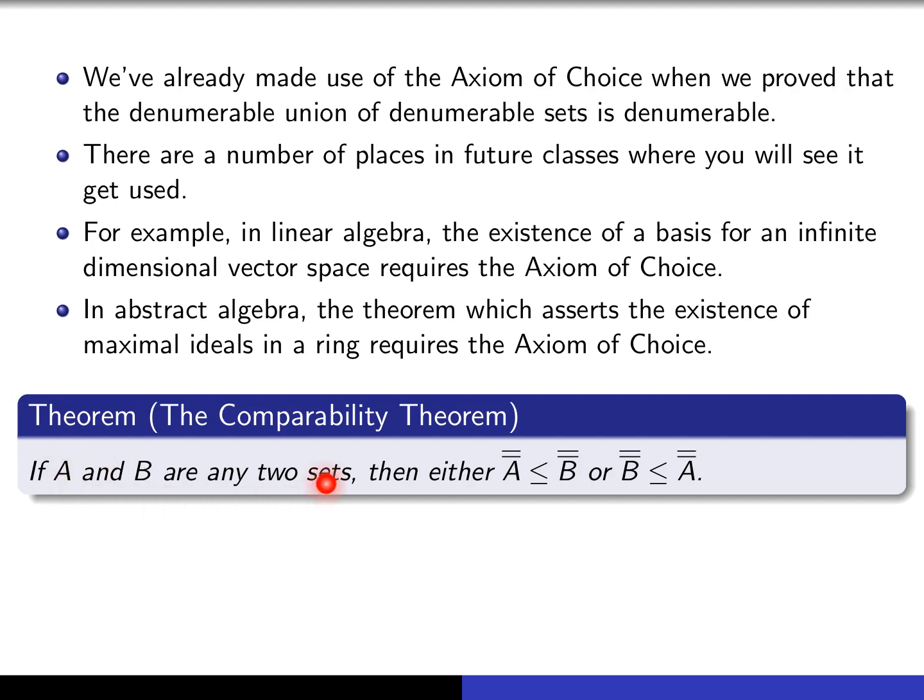It says that if A and B are any two sets, then either the cardinality of A is smaller than or equal to the cardinality of B, or vice versa. In other words, this less than or equal to sign, when applied to sets, is a linear order.